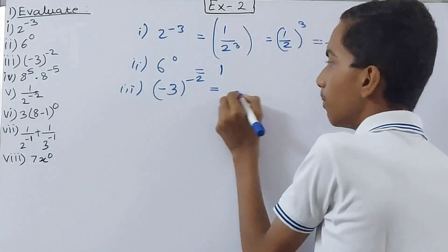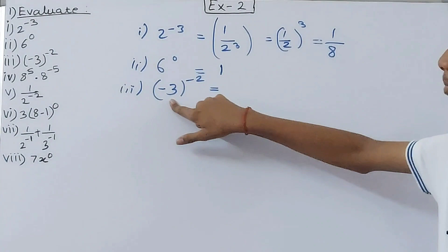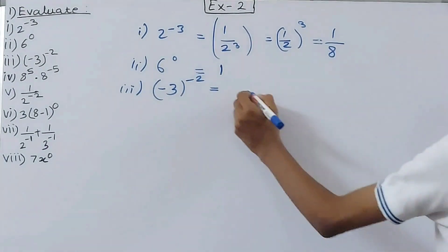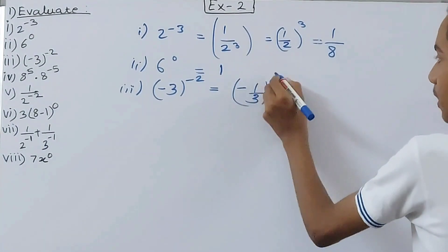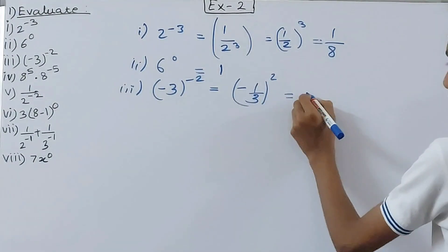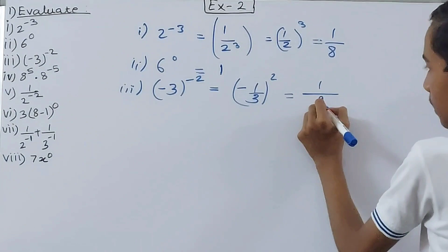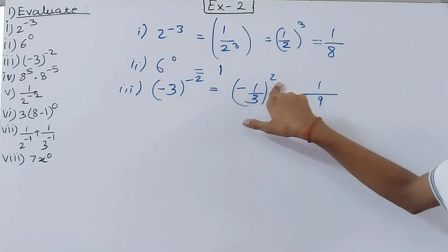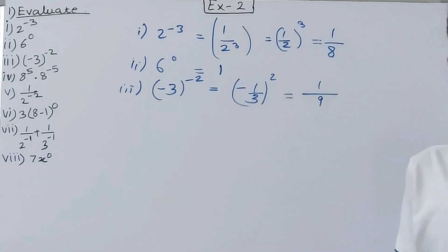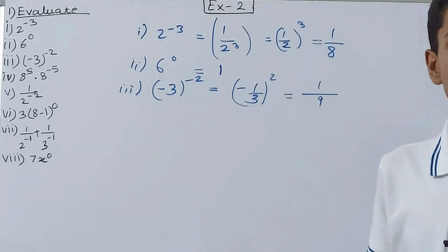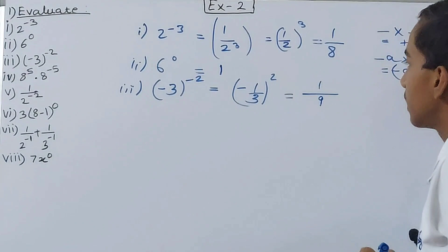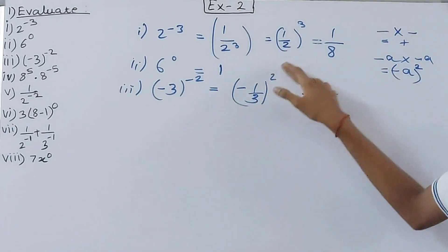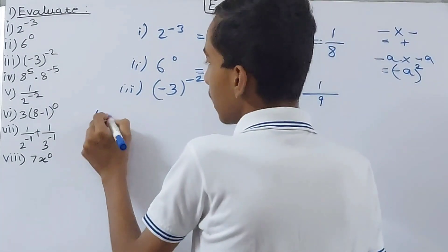Third, we have minus 3 to the power minus 2. Again, reciprocate the number: minus 3 to the power minus 2 becomes minus 1 by 3 to the power 2, which equals 1 upon 9. Because a negative number raised to an even power is always positive — minus raised to power 2 is plus — so minus 1 by 3 squared gives 1 by 9, since 1 squared is 1 and 3 squared is 9.